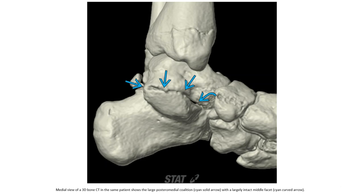Medial view on bone CT in the same patient shows a wide posterior medial coalition with a largely intact middle facet CN articulation.